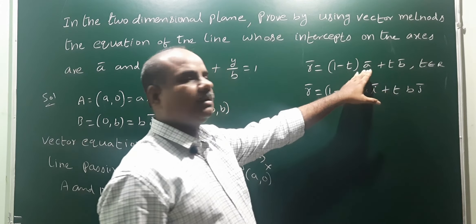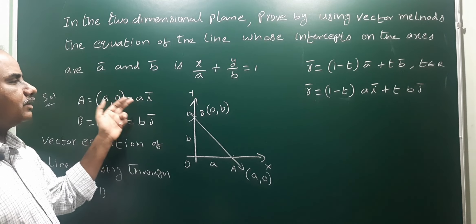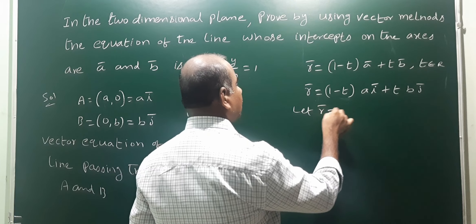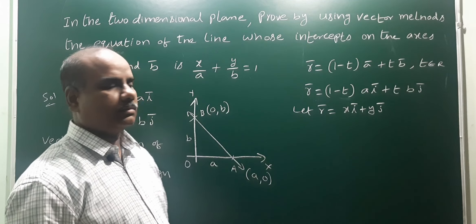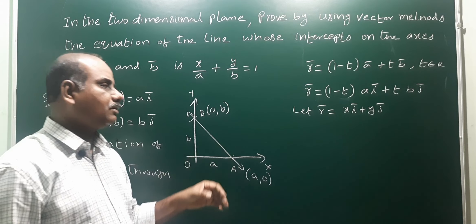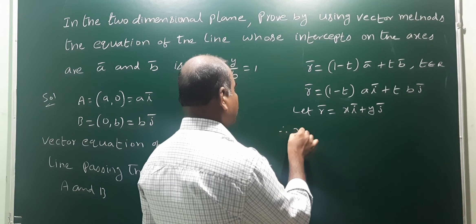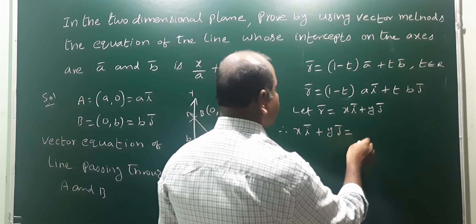So we have the vector equation of the straight line through points A and B as r̄ = (1−t)·aī + t·bj̄. Now we substitute r̄ = xī + yj̄ (since in 2D, r̄ = xī + yj̄). So xī + yj̄ = (1−t)·aī + t·bj̄. We now compare the ī and j̄ coefficients on both sides.